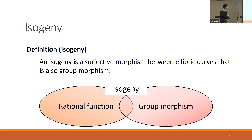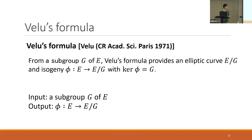Next I define isogeny. An isogeny is a surjective morphism between fd-curves that is a group morphism. This is a very important concept for isogeny-based cryptography. A Vélu formula computes from a subgroup G of E, and it outputs a quotient curve E/G and an isogeny phi from E to E/G with its kernel equal to G.